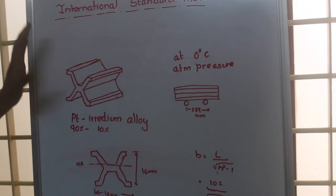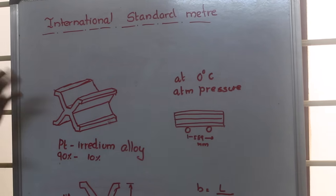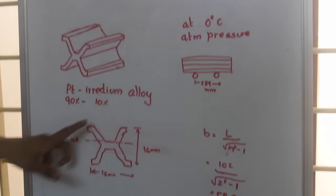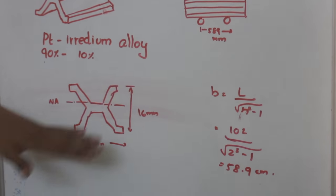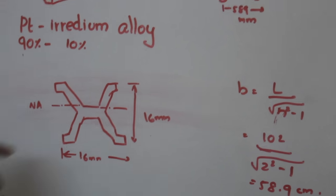The cross section of this particular one will be a Tresca section. It is a Tresca section where the dimensions are 60 mm into 60 mm.